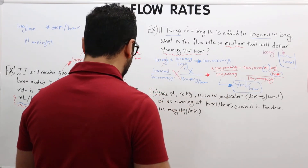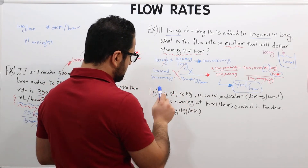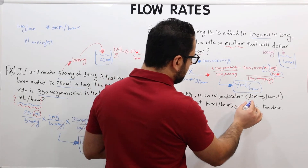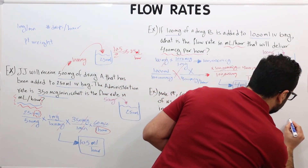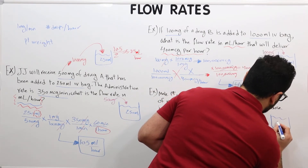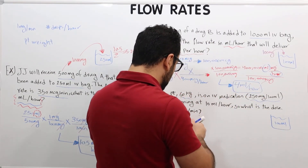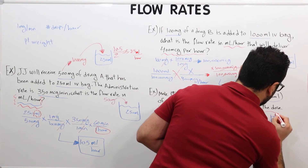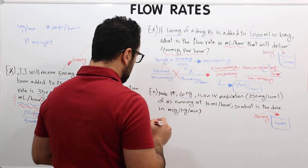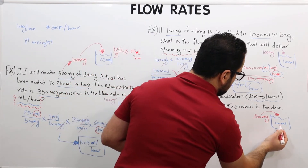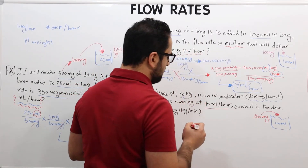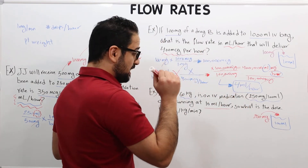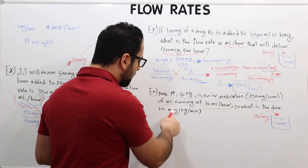Let's move into question number three. A male patient weighing 60 kilograms is on IV medication — 250 milligrams per 100 milliliters, meaning a 100 mL IV bag with 250 mg of medication inside, running at 10 milliliters per hour. The question gives us the flow rate and asks: what is the dose in micrograms per kilogram per minute?